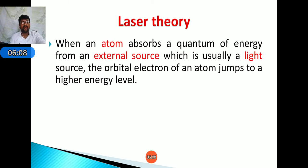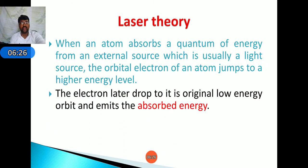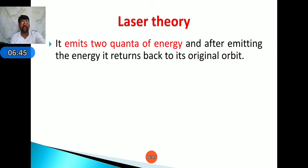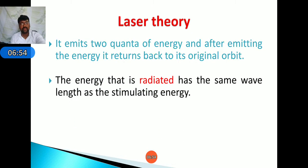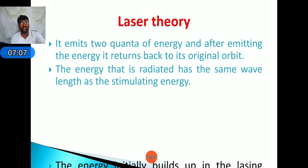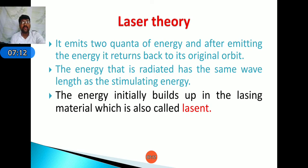Laser theory: when an atom absorbs a quantum of energy from an external source like a light source, the orbital electron jumps to a higher level. The electron later drops to its original lower energy orbit, emitting the absorbed energy. If the electron is already at a high energy level and absorbs a second quantum of energy, it emits two quanta of energy and returns to its original state. The energy radiated has the same wavelength as the stimulated energy. By repeatedly moving from lower to higher levels, the energy builds up in the lasing material, creating the laser. This energy is finally emitted as a highly amplified light beam.